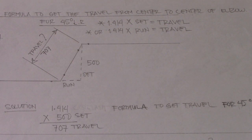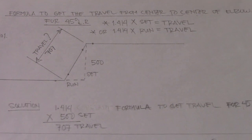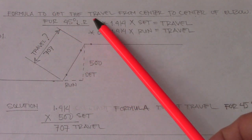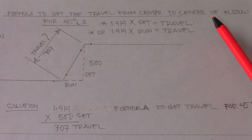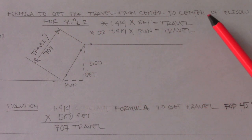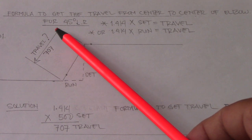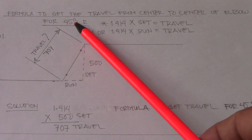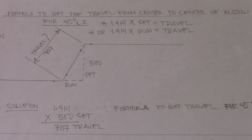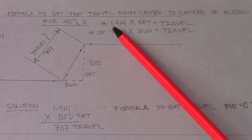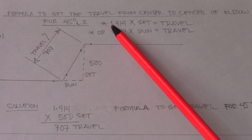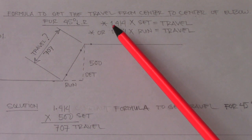Example number one. The formula is used to get the travel from center to center of an elbow. This is for 45-degree LR — LR means long radius. The formula is 1.414, which is our very important formula to get the travel.